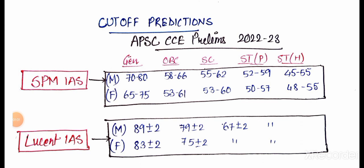Lucent has said 89 plus minus 2 for general male and female 83 plus minus 2. So I think Lucent is a little bit high but SPM is a little bit less.